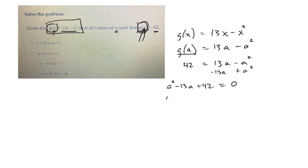I've got it equal to 0, so I can factor. Two things that multiply to 42 add to 13. I'm thinking negative 6 and negative 7. So either a minus 6 is 0, or a minus 7 is 0. So either a is 6 or a is 7. So those would be my two answers.